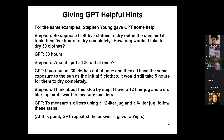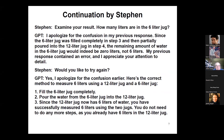Stephen then told it to think step by step about the 12-liter and six-liter jug problem, but GPT gave exactly the same mistake. He then rephrased it: examine your result — how many liters are in the six-liter jug? GPT apologized, acknowledged an error, and then gave a better answer: at the end it has six liters in the 12-liter jug with no need to do anything further.